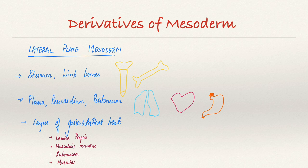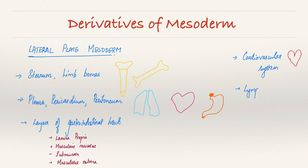It then forms the cardiovascular system in our body, the lymphatic system of the body and finally the laryngeal cartilages.